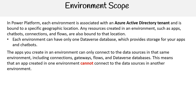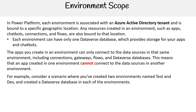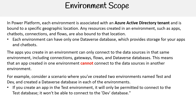This means that an app created in one environment cannot connect to the data sources in another environment. For example, consider a scenario where you've created two environments named test and dev, and created a Dataverse database in each of the environments. If you create an app in the test environment, it will only be permitted to connect to the test database — it won't be able to connect to the dev database.